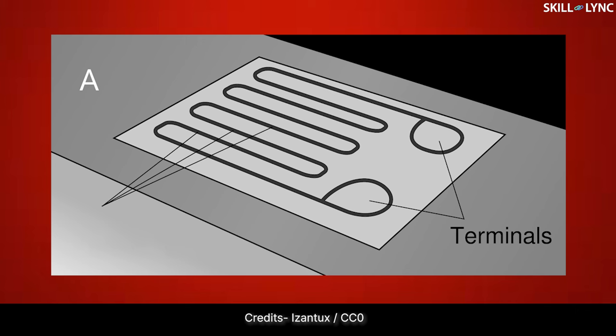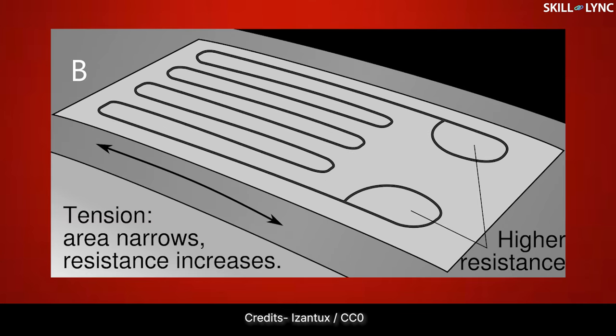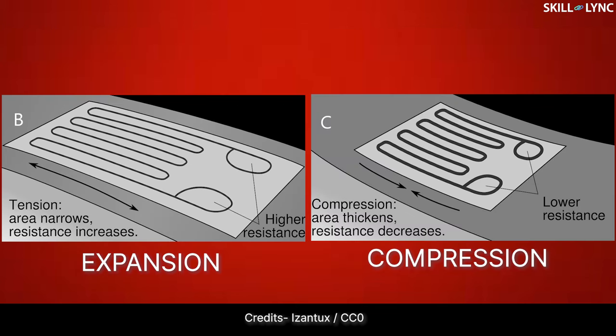When an object is subjected to a force, it can experience either tensile or compressive strain. These changes occur within the limit of elasticity. Now when a strain gauge is placed on the object and the object undergoes tensile strain, there is an elongation in the object which is quantified by a positive change in resistance. When the object is subjected to compressive strain, it shows a negative change in resistance. Thus they can be used to detect both expansion and compression of the object.